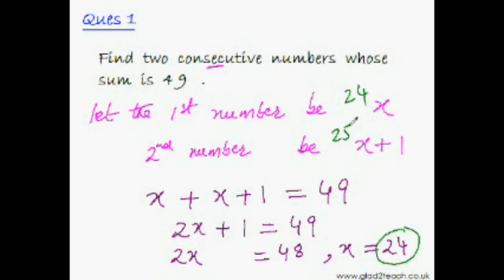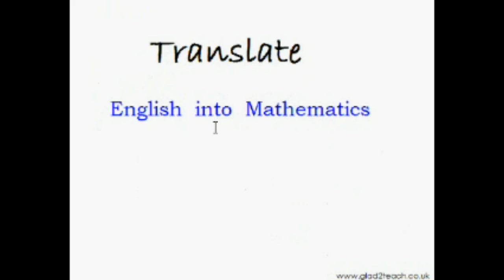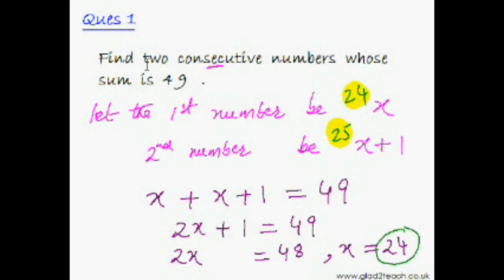If one number is 24, then the other number would be 25. You can even double-check: 24 and 25 are consecutive and they add up to 49. As you've just seen, solving any word problem is very easy if you know how to translate English into mathematics.